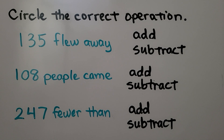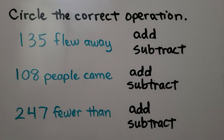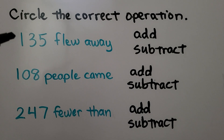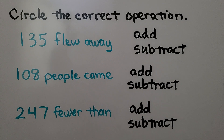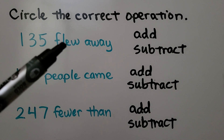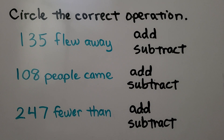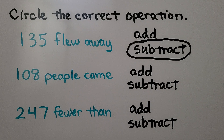It says to circle the correct operation. '135 flew away.' If we saw '135 flew away,' do you think we would add or subtract to find the answer? When we think about the words 'flew away,' that means they're gone — they went away, they're not there anymore. That means we're taking away. If you said subtract, you're right. We're going to subtract that 135.